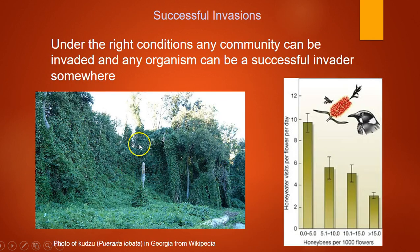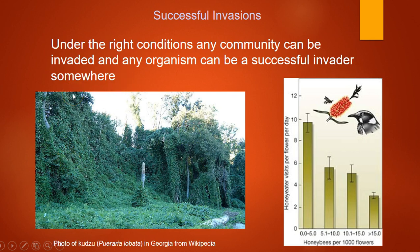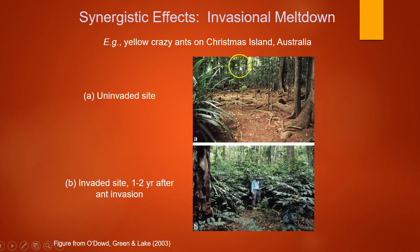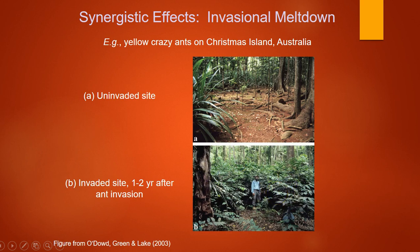Kudzu, found in Kentucky, wraps around plants and suffocates them by blocking light — humans released it on purpose thinking it would help with soil erosion. On Christmas Island, Australia, crabs are a keystone species that shape the environment by removing new plant growth. When ants were introduced, the crabs were inhibited and unchecked vegetation growth occurred.